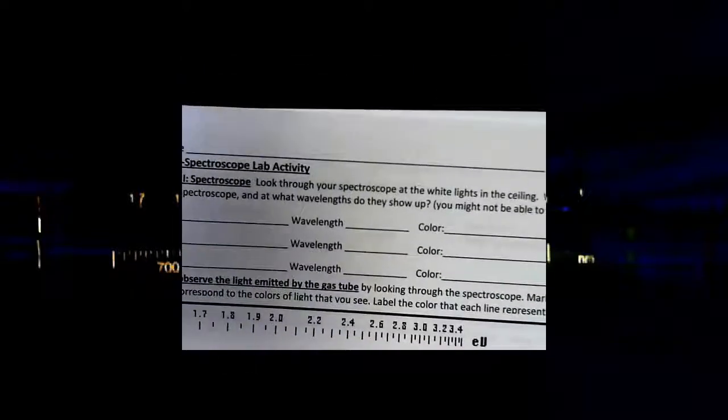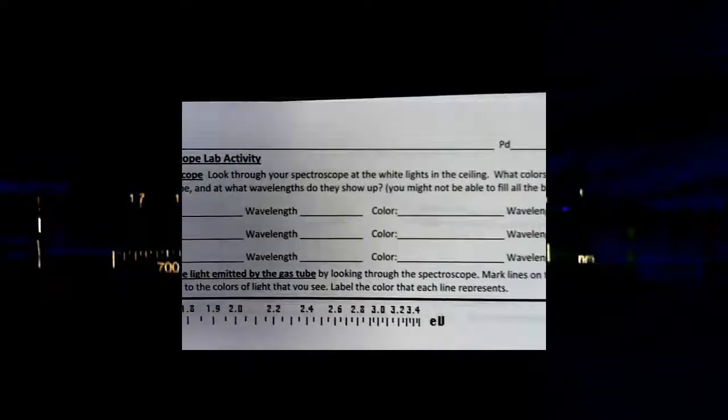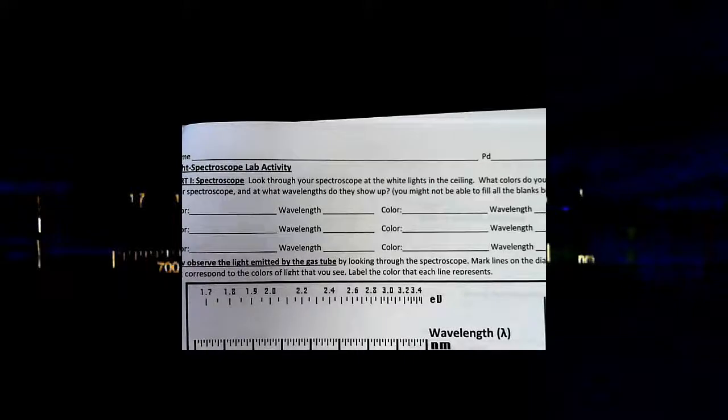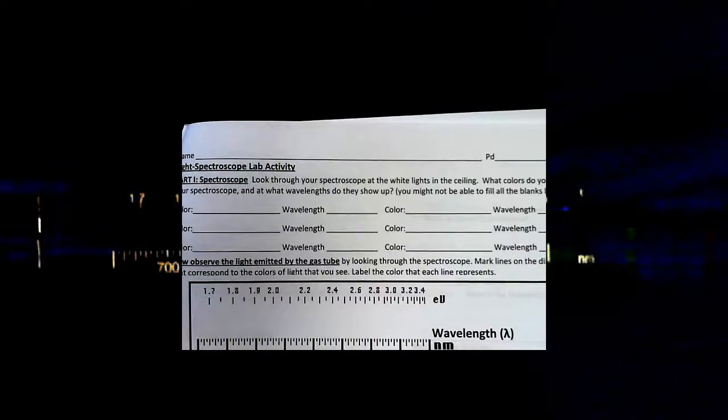So what I want you to do with this activity, as the lab activity says, we're going to look down here, and it says to look at the spectroscope at the white lights in the ceiling, which is what we were just looking at. It says what colors do you observe in the spectroscope, and at what wavelengths do they show up? So what I want you to do here is simply look at this picture again that I'm going to put up here. You can pause the video. Just write down the colors that you see and the wavelength that they show up. For instance, the first color I would write down is over here on the right side. I would call that purple or violet, and it's at 400 nanometers. So I would write purple, 400 nanometers. So take a minute, look at this picture right here, and write down all the colors and the wavelengths that you see.